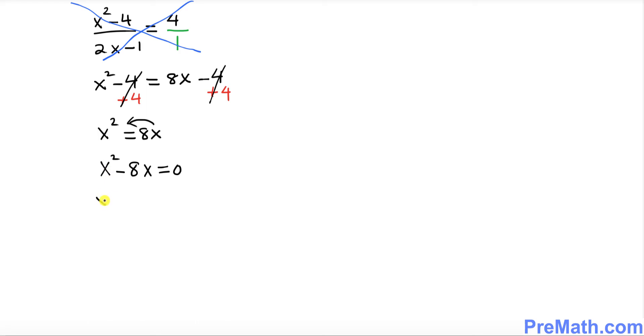Now here we can factor X out. X times X minus 8 equal to 0. So if you split them up, one X equal to 0, the other side is going to be X minus 8 equal to 0. So that's going to give you X equal to 8.